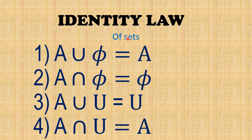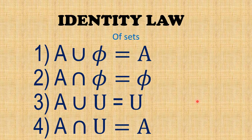Good evening students. Let us start Identity Laws today. What is meant by identity law? If you have A union φ, that is nothing but A. If you take A intersection φ, that is also φ. If I consider A union with the universal set, I will be getting the universal set. And if I take A intersection with the universal set, it will be the set A. Let us see how to prove this and do some examples.